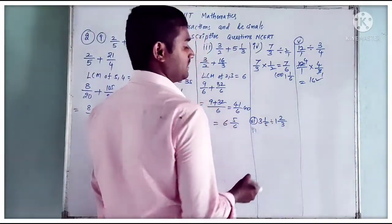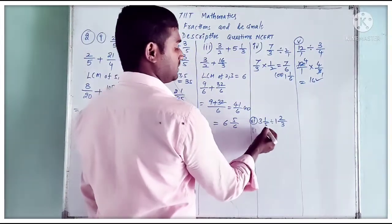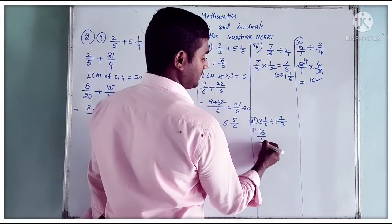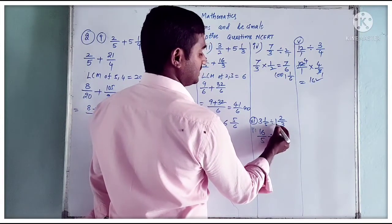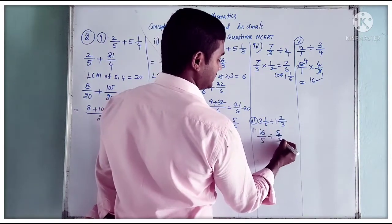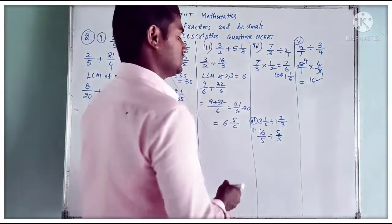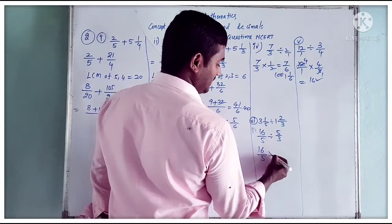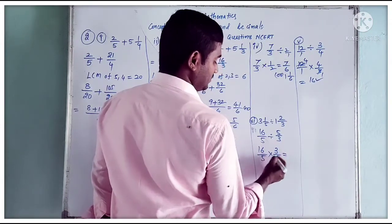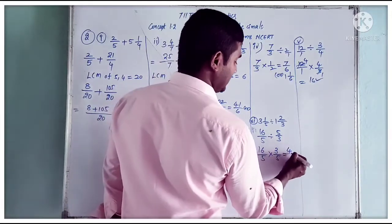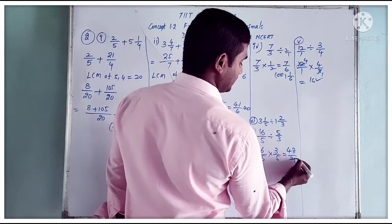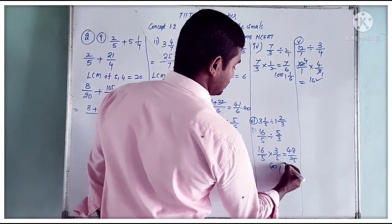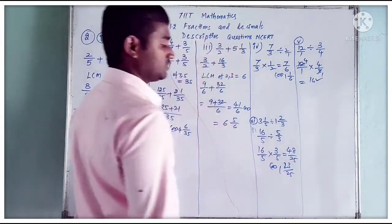Sixth part: 3 and 1 by 5 divided by 1 and 2 by 3. Convert to improper: 3 and 1 by 5 becomes 16 by 5. 1 and 2 by 3 becomes 5 by 3. Dividing two fractions, we do the reciprocal of the divisor: 16 by 5 into 3 by 5. Check for cancellation — none. So 16 into 3 is 48 by 25. In mixed fraction, that is 1 and 23 by 25.